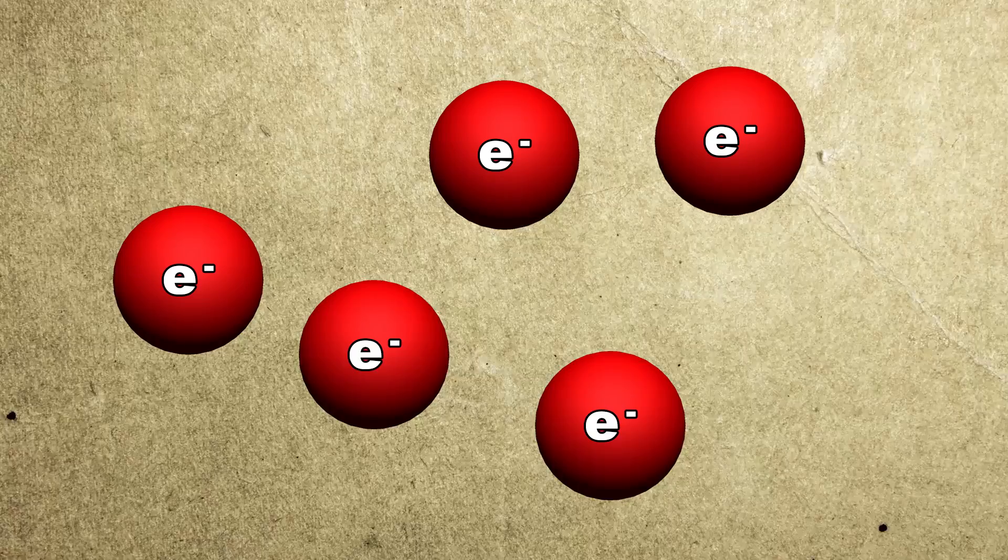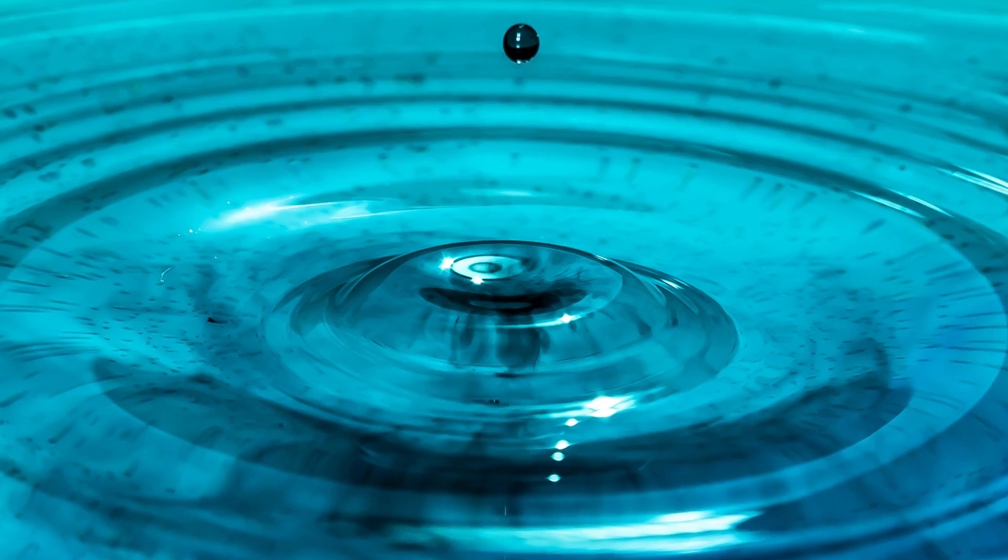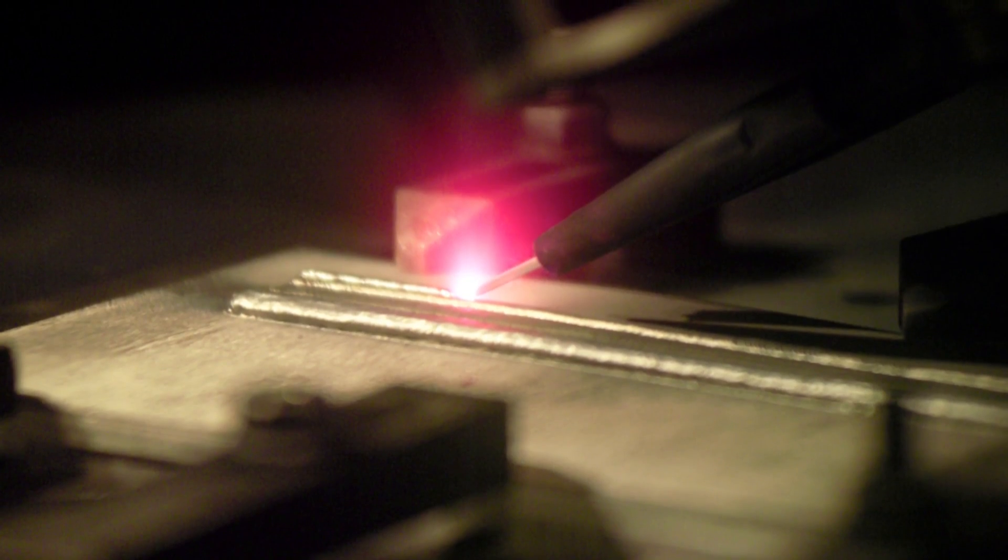The electrons aren't actually arriving at random positions, they're actually slowly forming interference fringes just like waves, but electrons are supposed to be particles.